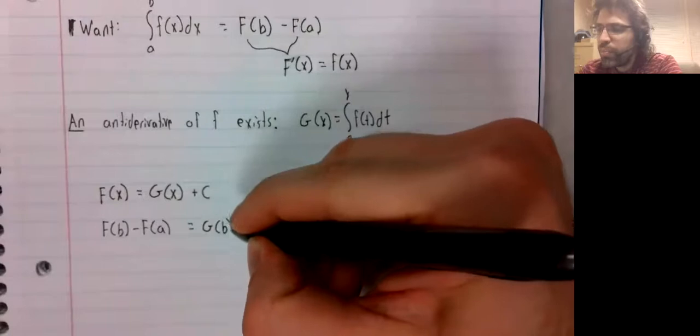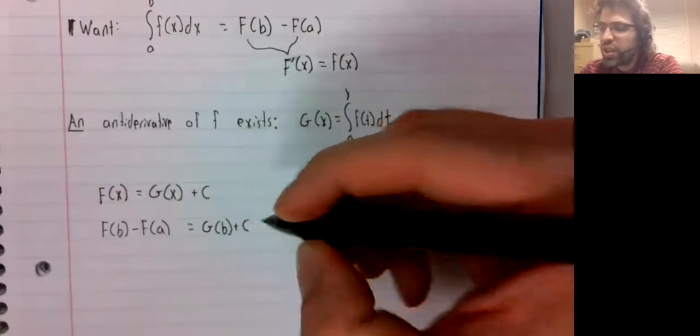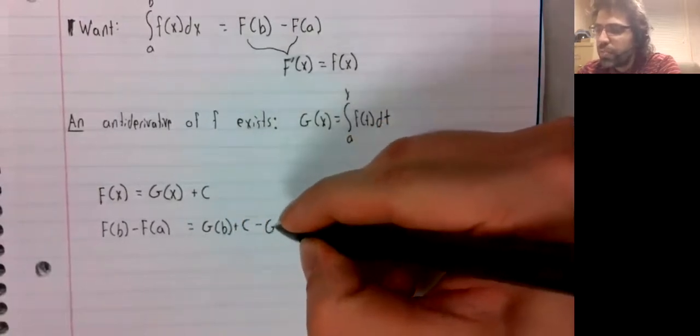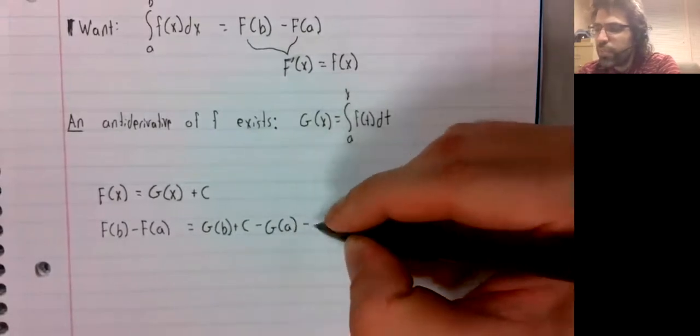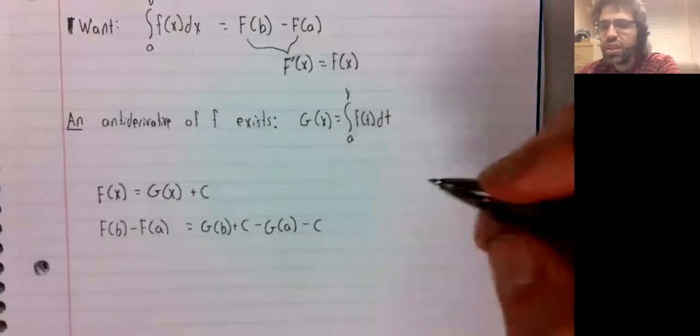That's g of B plus c minus g of A minus c.